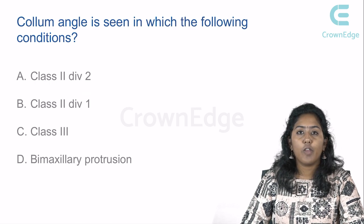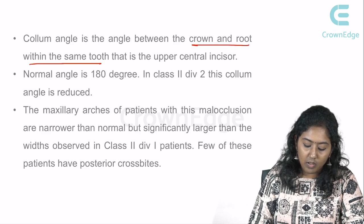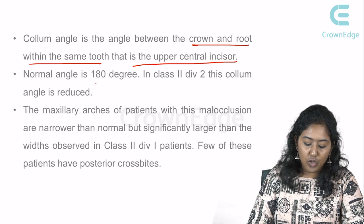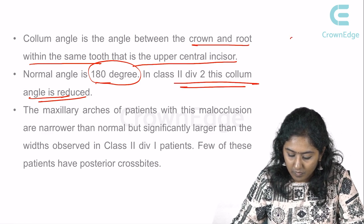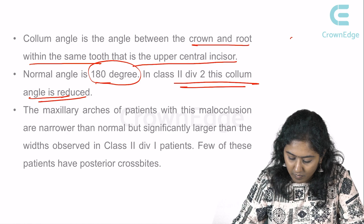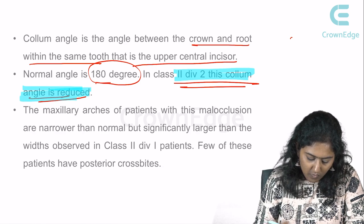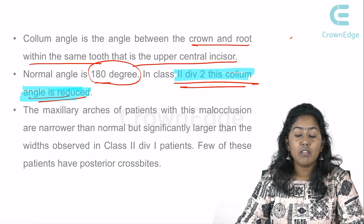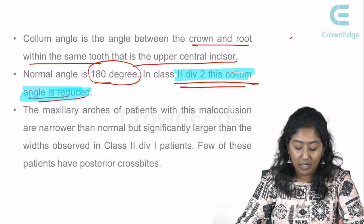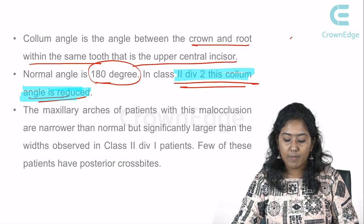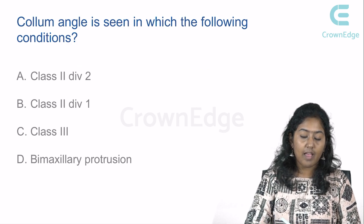The column angle is the angle between the crown and root of the same tooth — specifically the upper central incisor — and a normal column angle is 180 degrees. In Class 2 Div 2 malocclusion, this column angle is reduced. The maxillary arches in this malocclusion are narrower than normal but larger than in Class 2 Div 1 patients; some have posterior crossbites. The answer: column angle is seen in Class 2 Div 2 malocclusion.